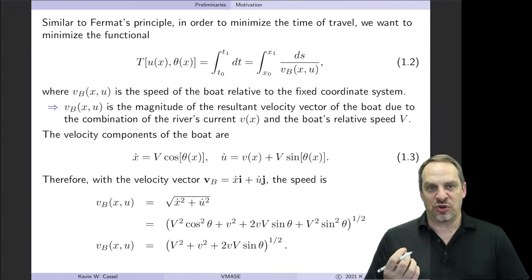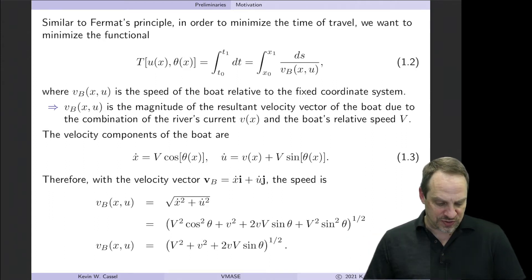Okay, so the first step is to determine a mathematical expression of the word statement of the problem. I want to minimize the time of travel across the river. So this is very similar to Fermat's principle in the sense that I want to minimize the total travel time capital T. We actually now have two dependent variables, U and theta. It turns out they're related to each other, but for now it looks like we have two separate dependent variables, U and theta. The path and the heading angle, both of which are functions of the independent variable, X.